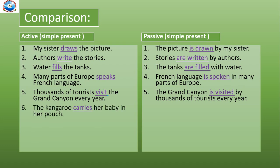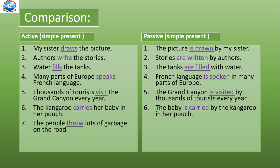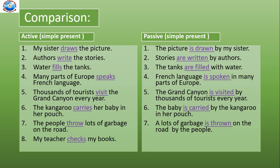Active: The kangaroo carries her baby in her pouch. Passive: The baby is carried by the kangaroo in her pouch. Active: The people throw lots of garbage on the road. Passive: A lot of garbage is thrown on the road by the people. Active: My teacher checks my books. Passive: My books are checked by my teacher.